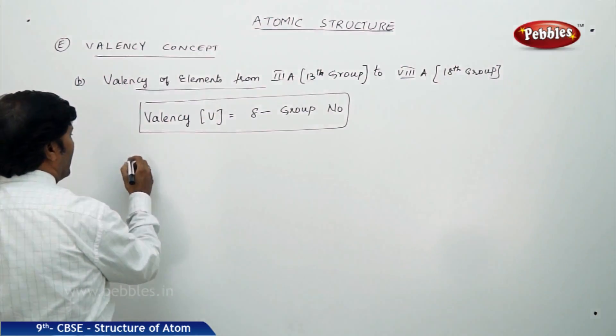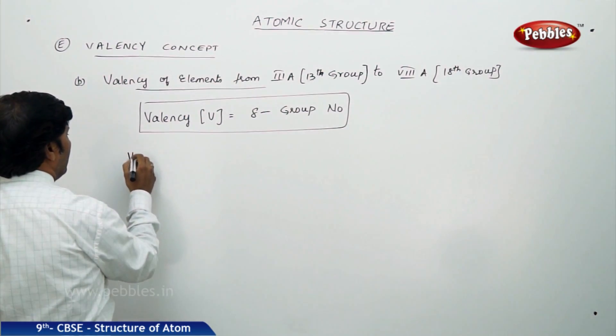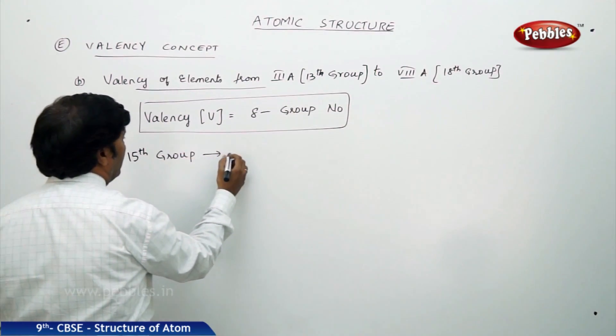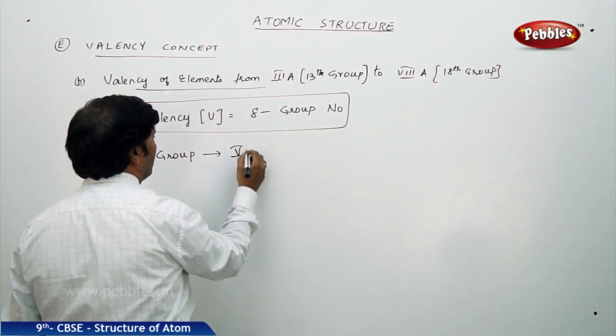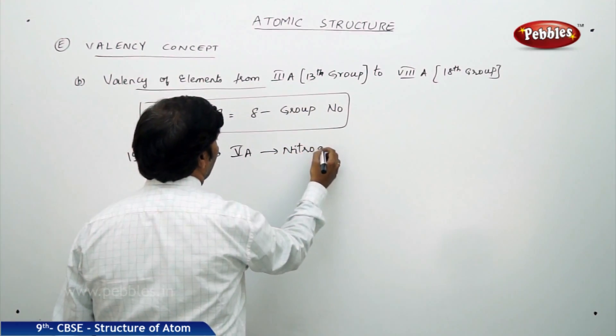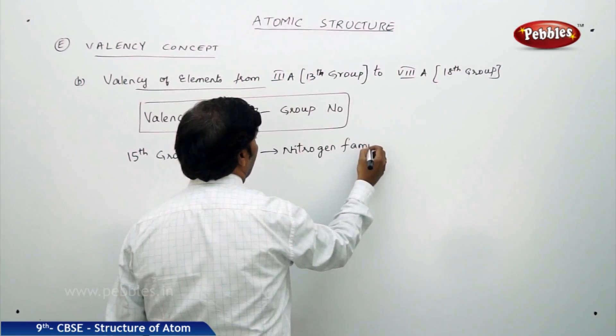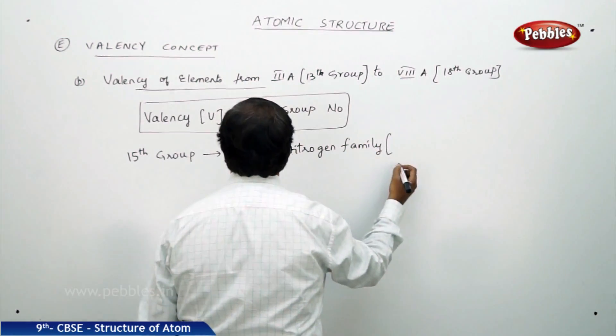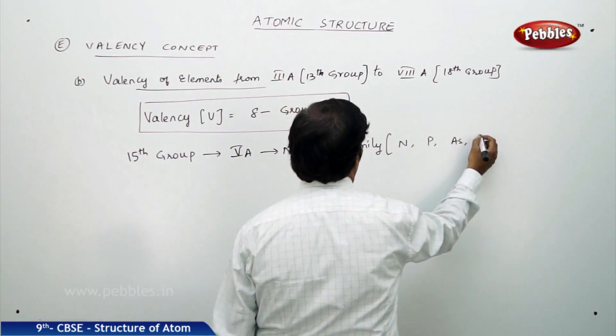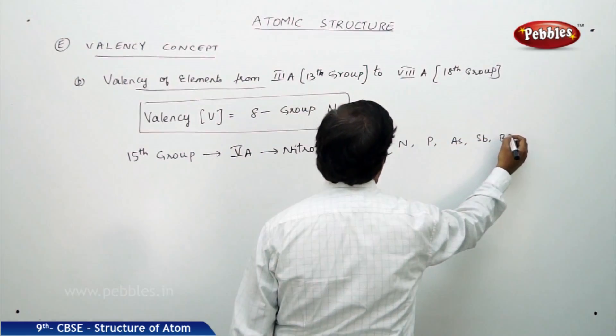So take the 15th group, 5A is nitrogen family. Here you can take elements nitrogen, phosphorus, arsenic, antimony and bismuth.